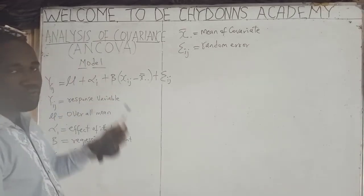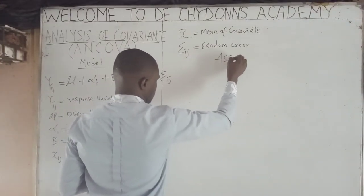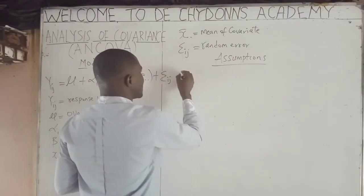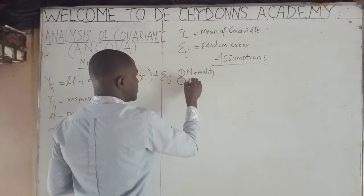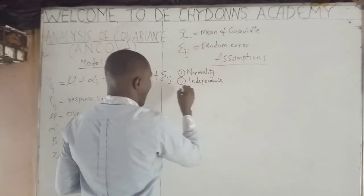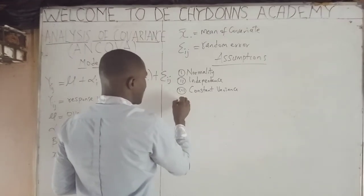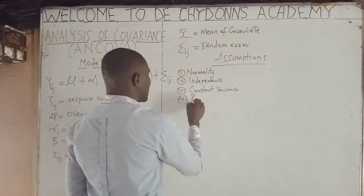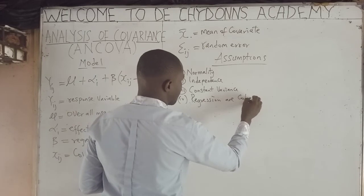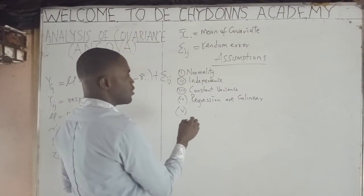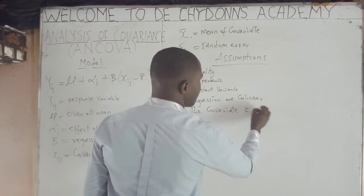ANCOVA has its assumptions. Assumption I is normality. Assumption II is independence. Assumption III is constant variance. Assumption IV is that regression lines are linear — that is, regression lines are collinear. Assumption V is that the covariate is not affected by treatment.